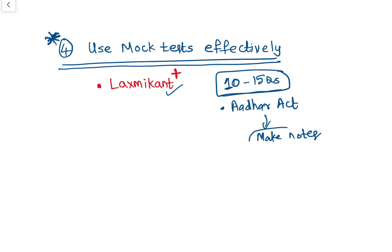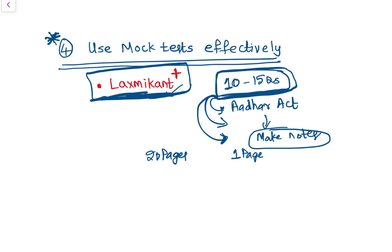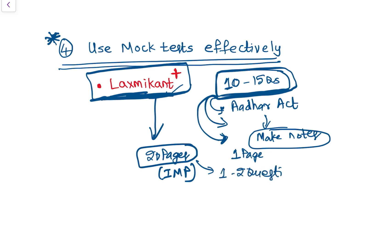For such topics, make notes — at most one page of notes on the Aadhaar Act. Choose about ten to fifteen questions from every test — not more than that — and make notes on all those topics which are important and can be asked in prelims but are not covered in Lakshmikant. I call this exercise 'Lakshmikant Plus.' Say you made twenty pages of notes from mock tests on topics not covered in Lakshmikant — these twenty pages become your Lakshmikant Plus.